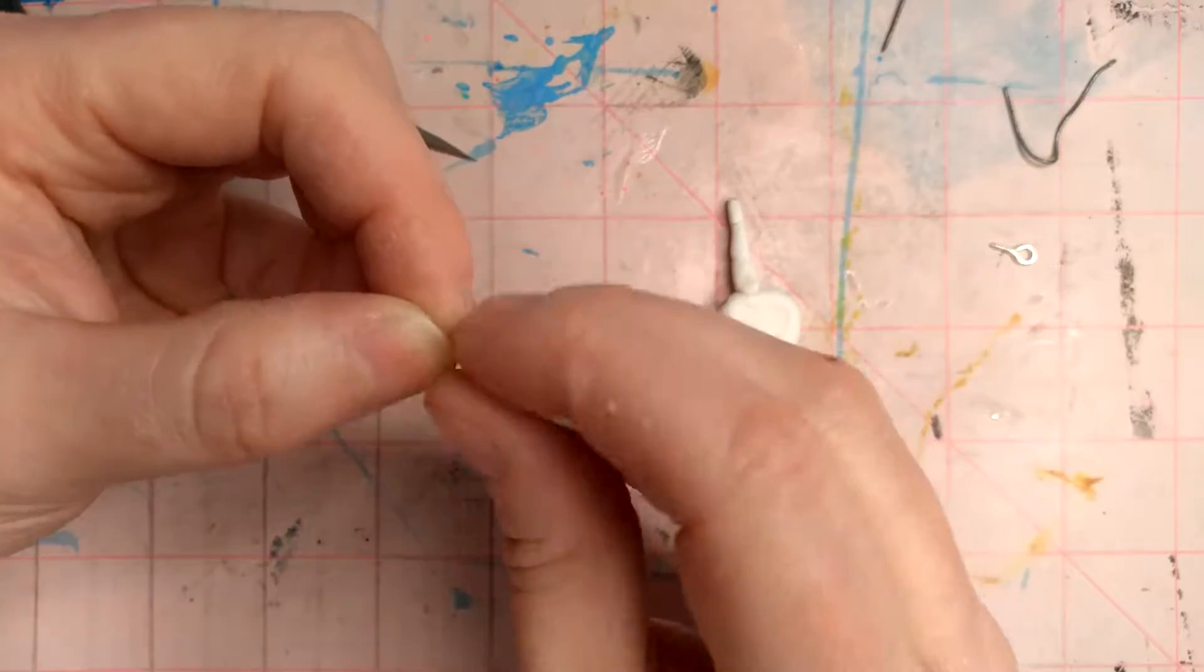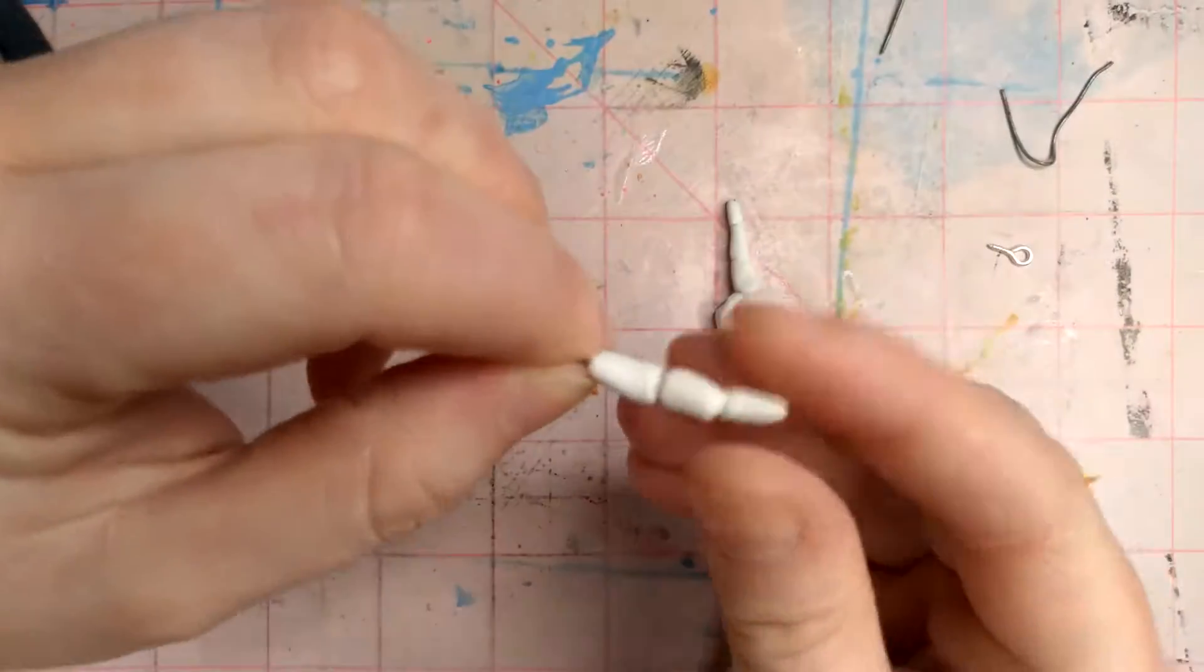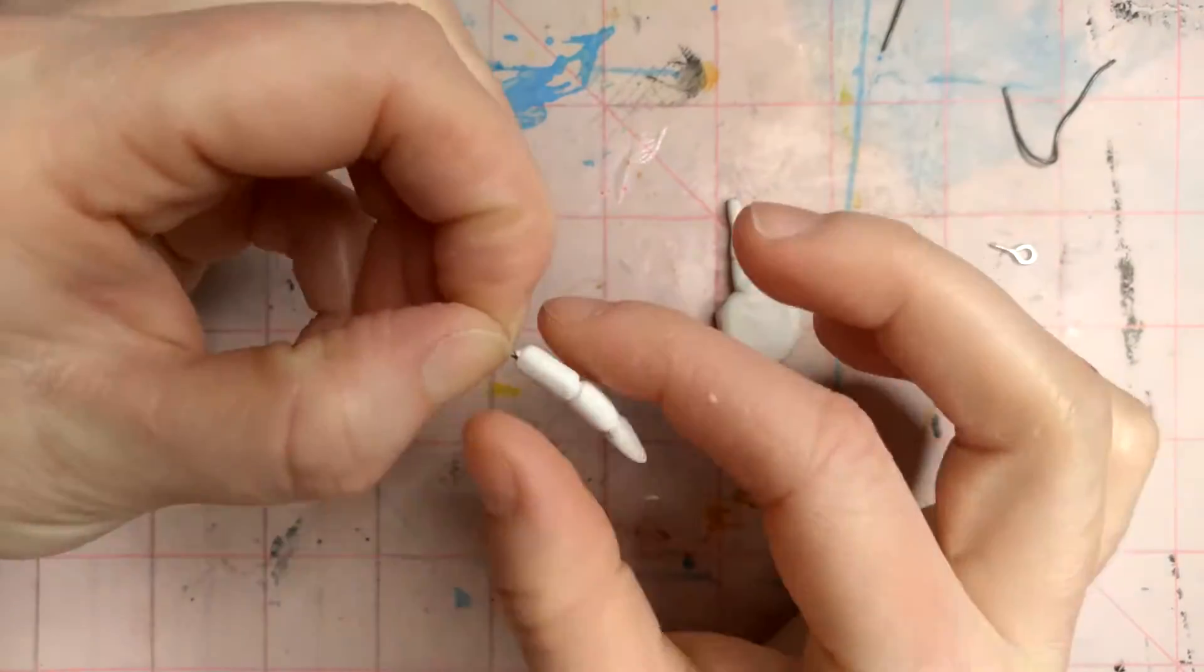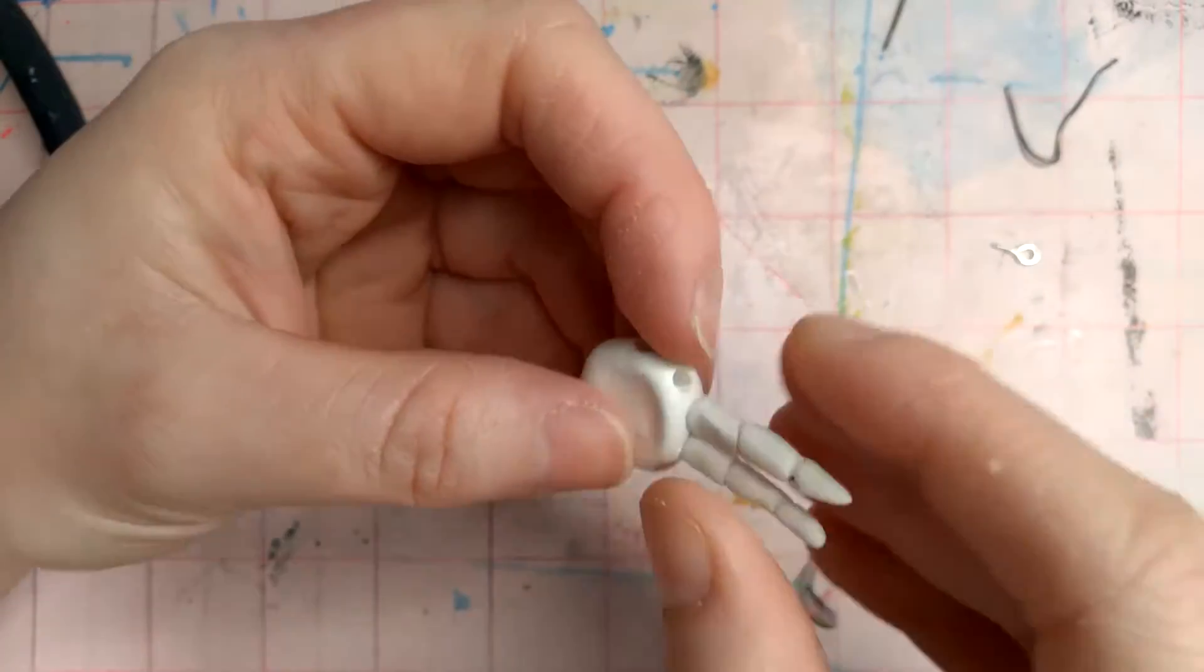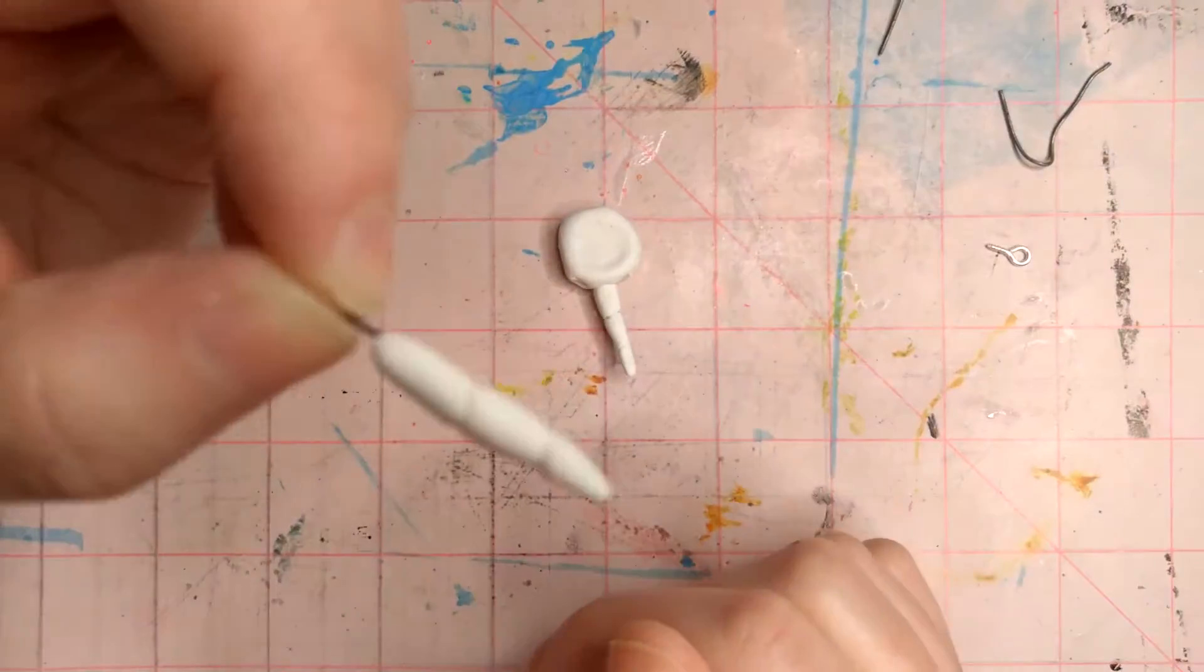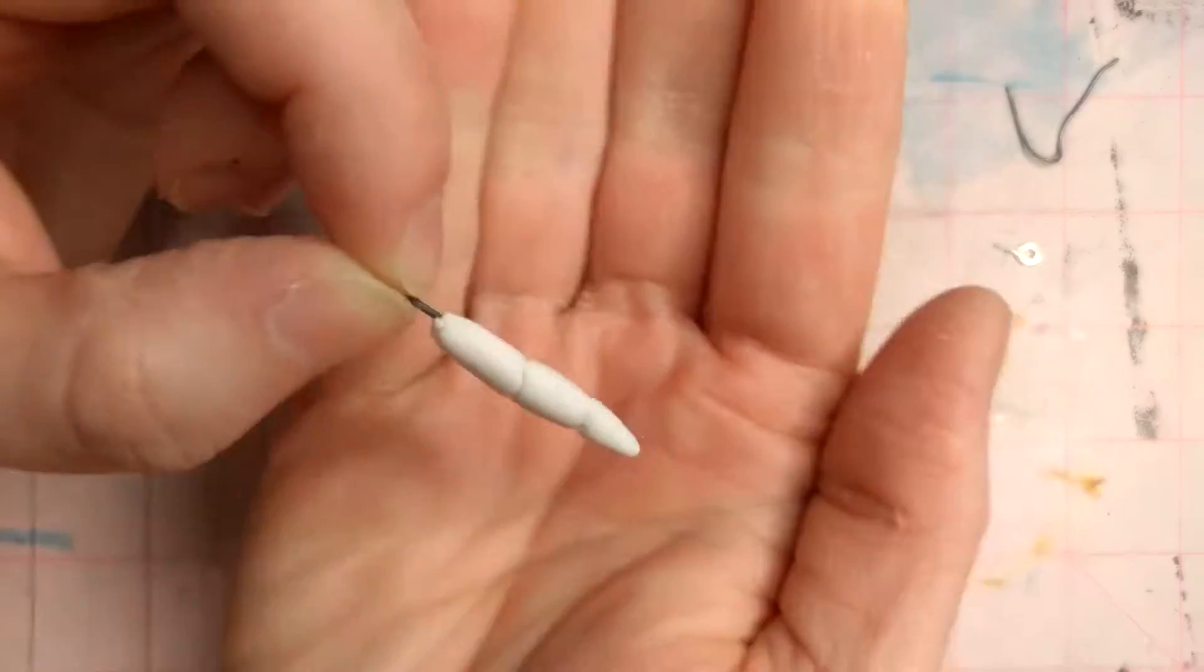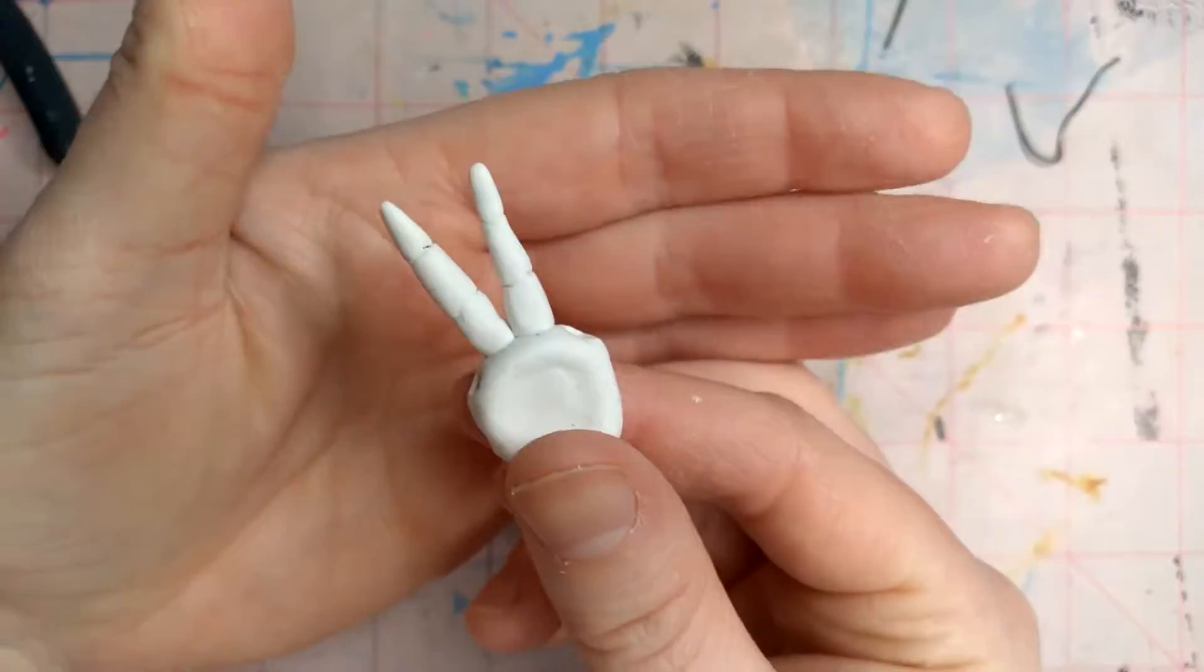So we're putting each finger on a wire and then we're defining each. I always say 'you know' too much. I need a counter. I've been editing them out. I've been paying attention when I talk and I say 'you know' too much.